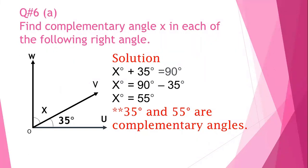Now the next question: find the complementary angle X in the given right angle. Angle UOV is 35 degrees and angle VOW is the unknown angle X. We know the sum of these two angles should be 90 degrees. So we write 35 degrees plus X equals 90 degrees. Taking X alone, we shift 35 to the other side: X equals 90 minus 35 equals 55 degrees. So 35 degrees and 55 degrees are complementary angles because their sum is 90 degrees.